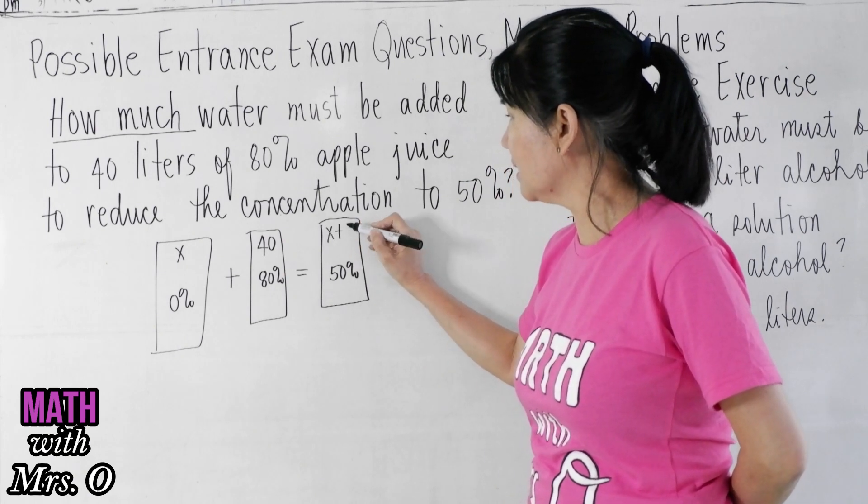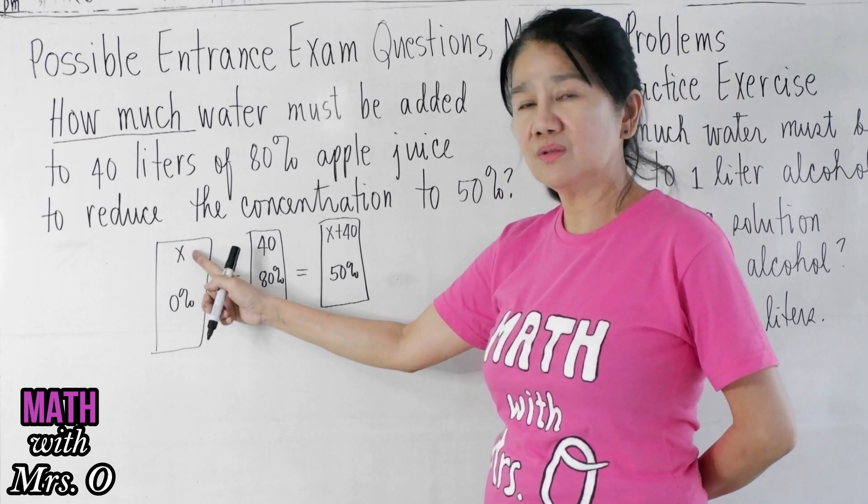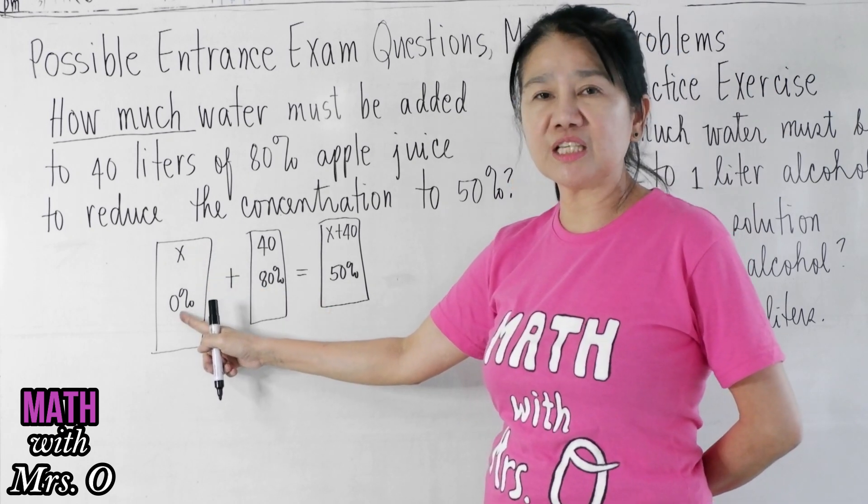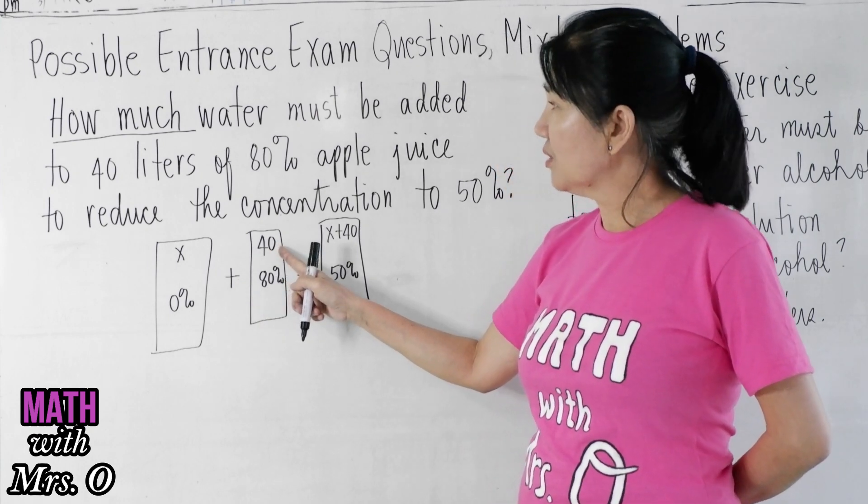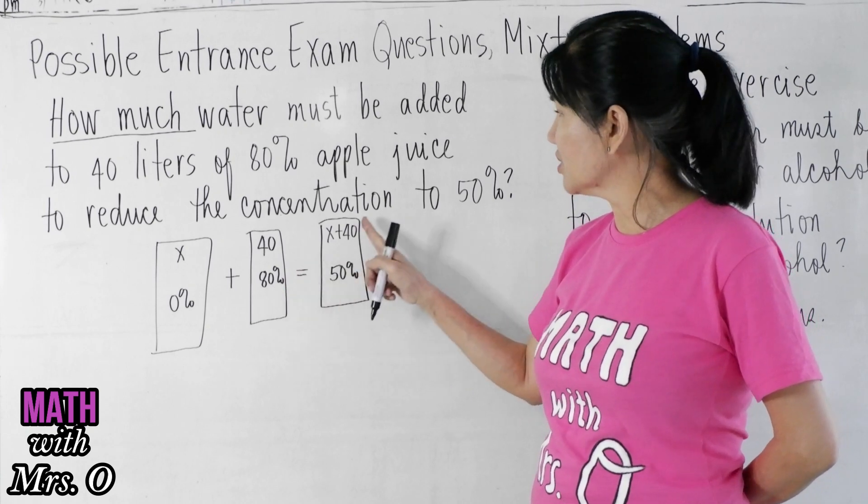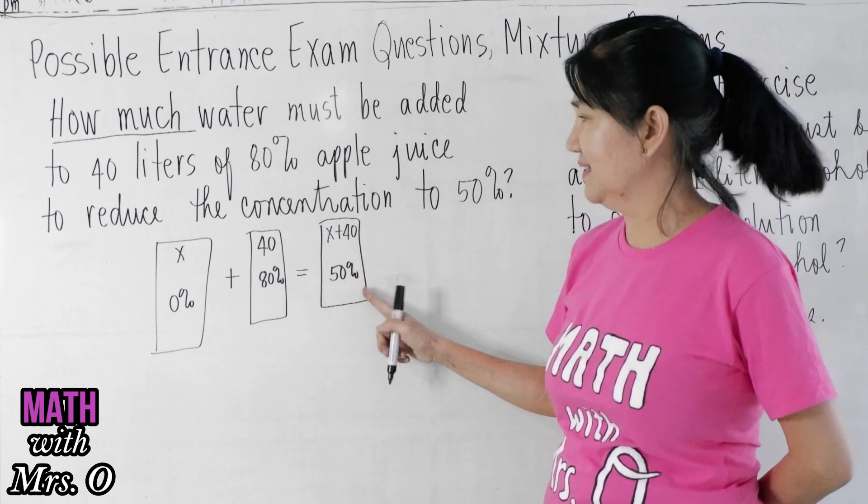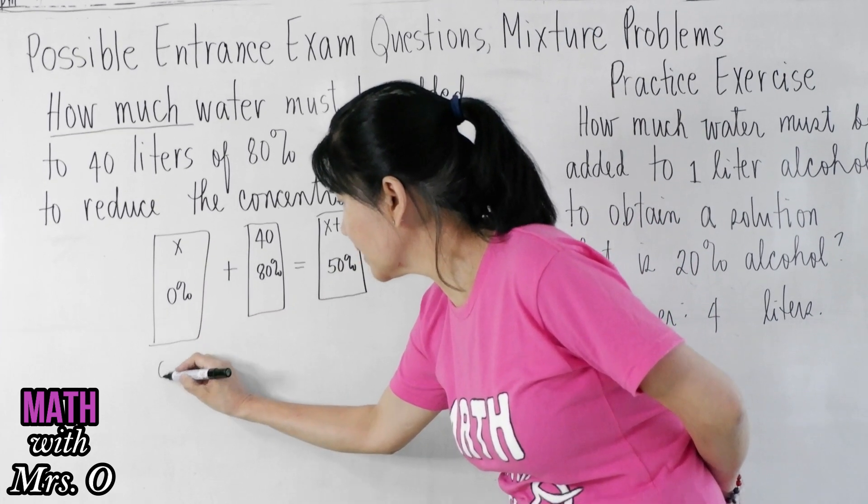And we repeat that: how much water, which is 0% apple juice, must be added to 40 liters of 80% apple juice to reduce the concentration to 50%? There, so you get the mixture.